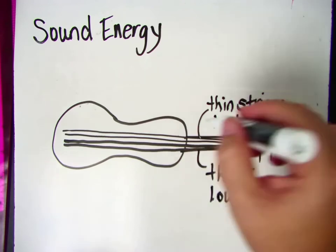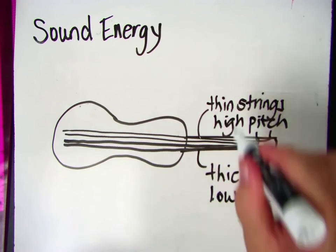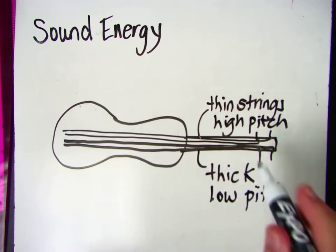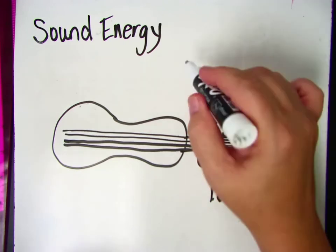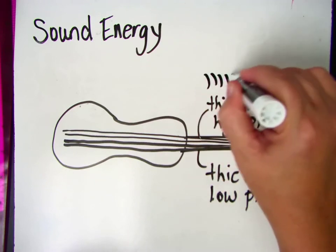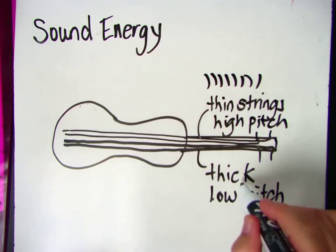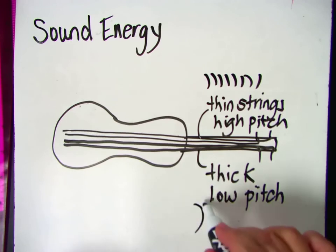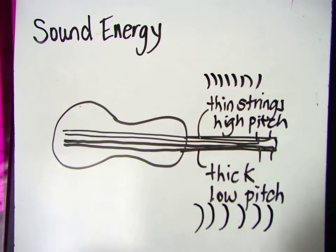It's kind of neat because the pitch comes from the waves. A high pitch would be waves that look small and quick, and a low pitch, the waves would look large and slow. That's why the sound is different, because the waves look different.